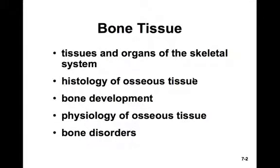Here we are in the chapter on bone tissue. This chapter is mostly about the physiology of bone, and the following chapter will be about the different bones in the body and their features. In this chapter, we'll look at the tissues and organs of the skeletal system, the histology of osseous tissue in more detail, how bones develop, the physiology of osseous tissue, and some bone disorders.